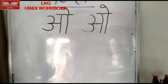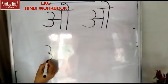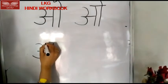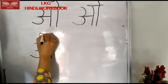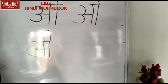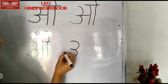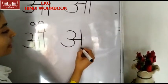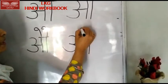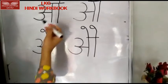अब हम बनाएंगे औ। आधा गोल, एक और आधा गोल, लेटी रेखा, खड़ी रेखा, एक और खड़ी रेखा, उसके ऊपर छत, छत के ऊपर एक ऊपर एक और पूँछ। तो ये कौन सा अक्षर बन गया हमारा? आओ। एक बार और लिखके बताती हूँ - आधा गोल, एक और आधा गोल, लेटी रेखा, खड़ी रेखा, एक और खड़ी रेखा, उसके ऊपर छत, छत के ऊपर एक पूँछ और एक और पूँछ। तो हमने आज दो अक्षर लिखना सीखे - ओ ओखली और औरत।